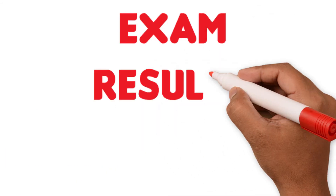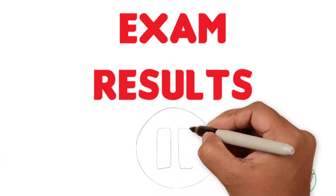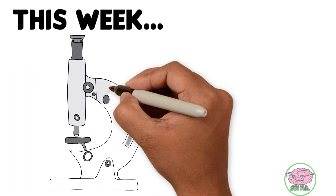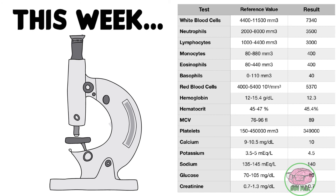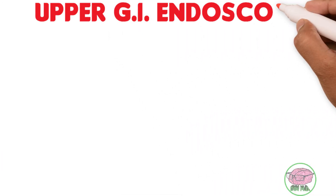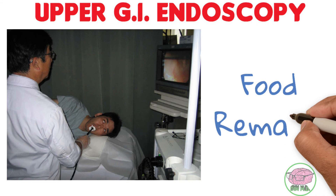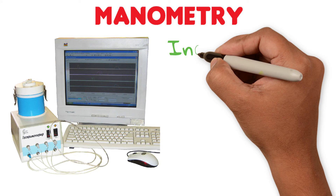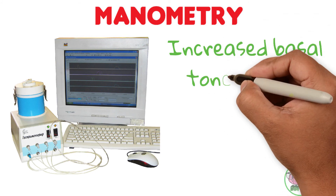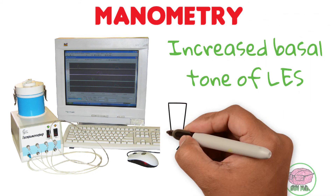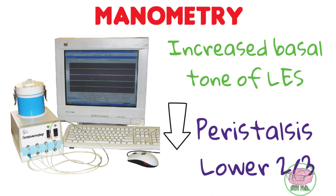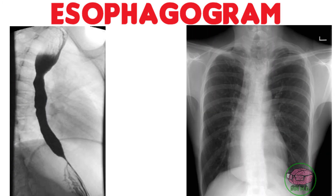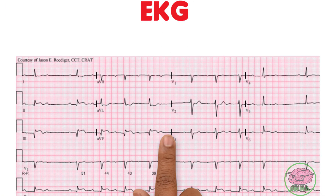Now I'll show you the results of John's exams — please pause the video so you can see each exam carefully. John shows you a blood exam done this week. You also order an upper GI endoscopy, which reports food stuck in the esophagus, and an esophageal manometry reporting an increased resting pressure of the lower esophageal sphincter as well as decreased peristalsis in the lower two thirds of the esophagus. An esophagogram and an electrocardiogram are also done.